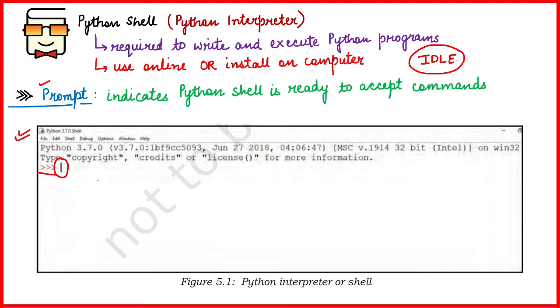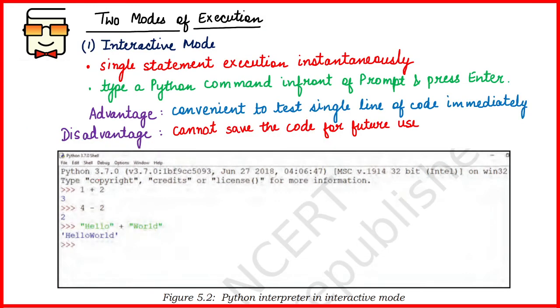There are two different modes in which the Python shell can be used: the interactive mode and the script mode. Let's look at the main differences between these two modes of execution.